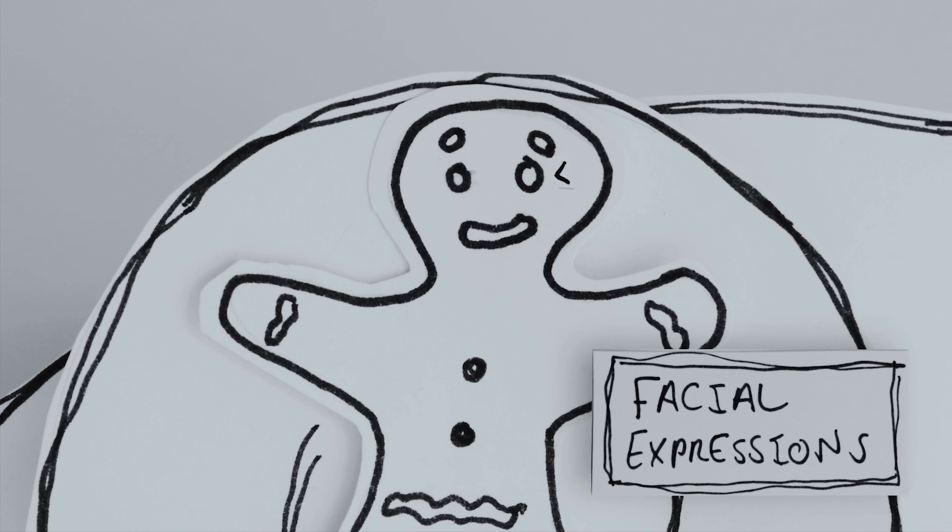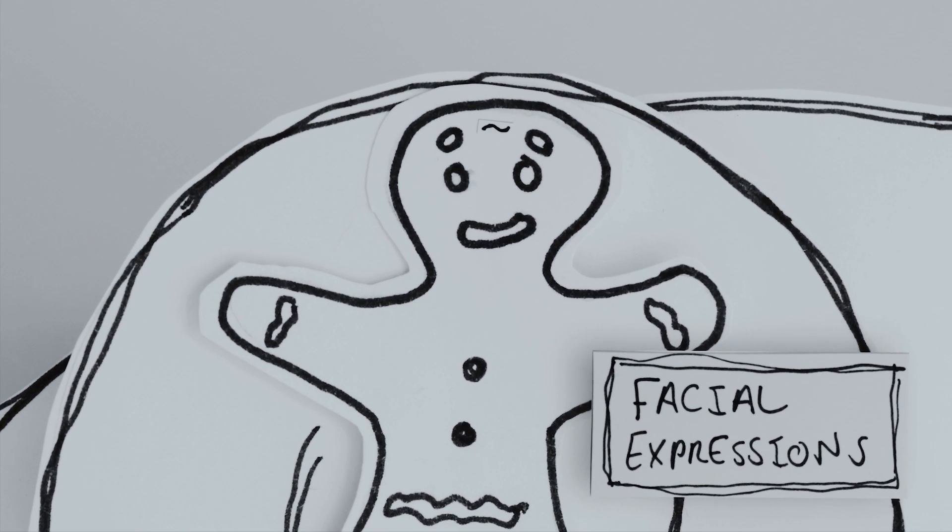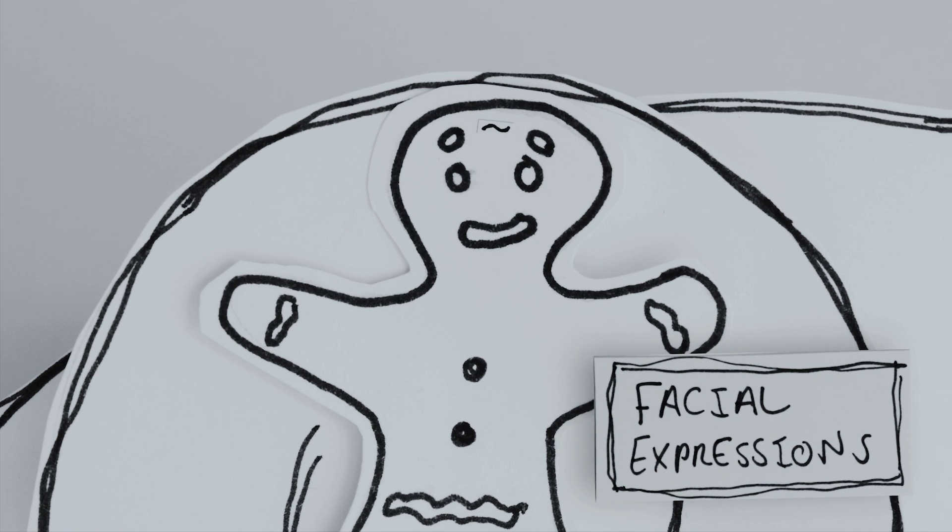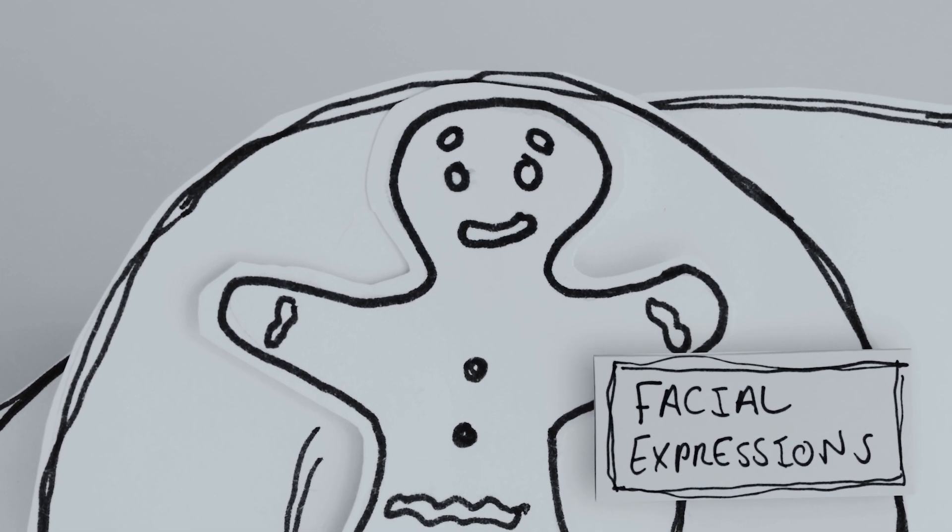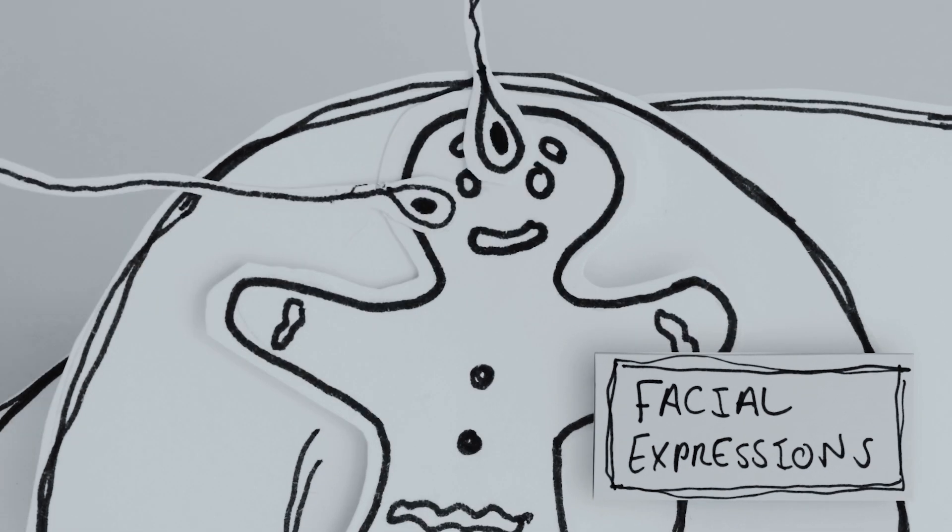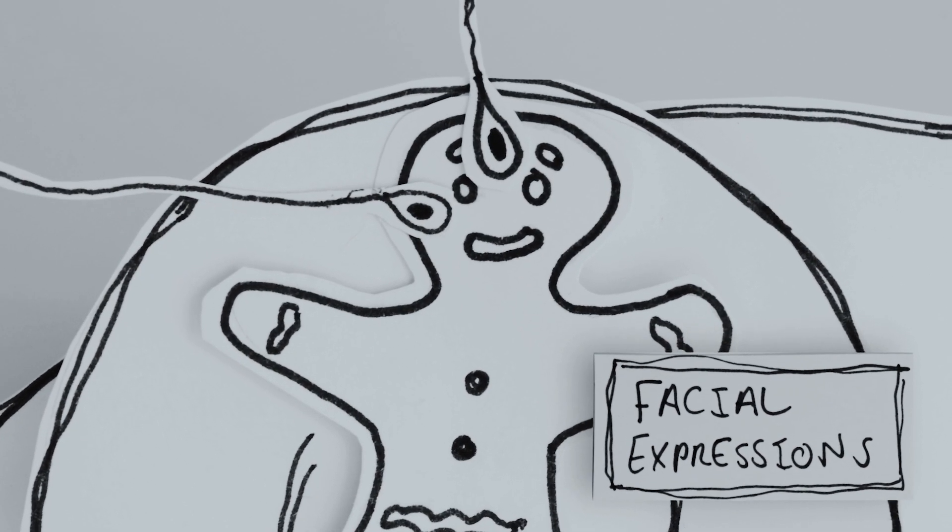These movements can indicate what kind of emotion we are having. The changes are sometimes impossible to see with the naked eye, but we can measure them using electrodes.